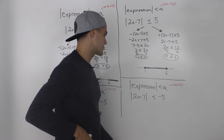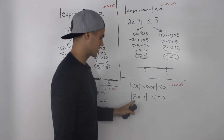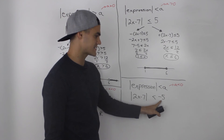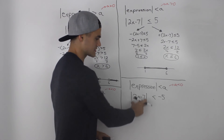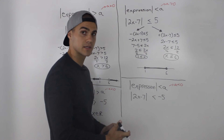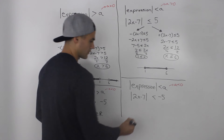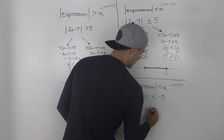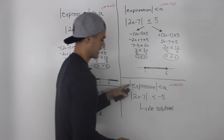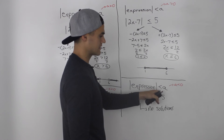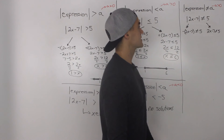Moving on to the next case: a less than inequality when a is negative — for example, when is the absolute value of 2x minus 7 less than negative 5? The absolute value will never be less than negative 5 because it's always positive no matter what x values we use. So there are no solutions to this case. Whenever you have an absolute value of an expression being less than a negative number, there are never any solutions.